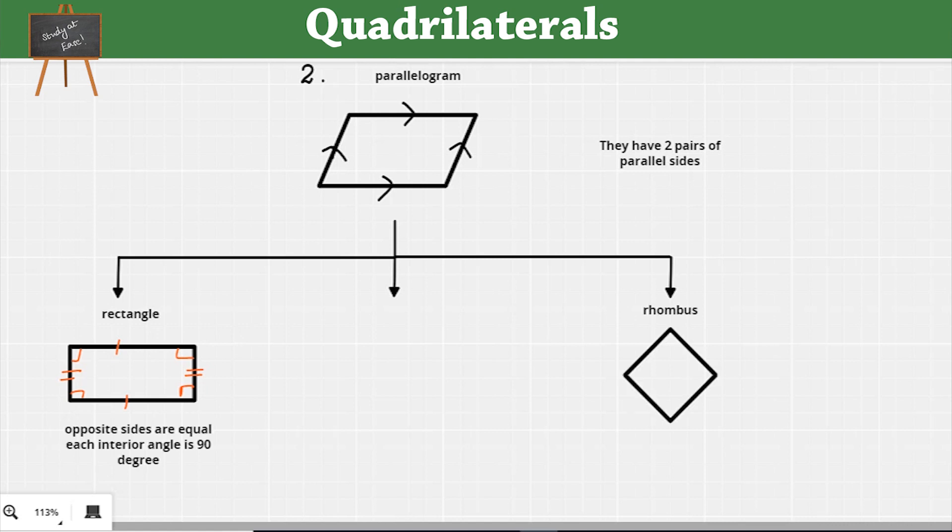Now let's talk about a rhombus. What do you know about a rhombus? A rhombus is a type of a parallelogram in which all the four sides are equal, as you can see in the picture. So in a parallelogram, if all sides are equal, then we call it as a rhombus.